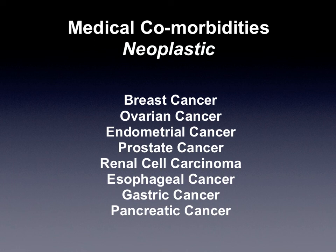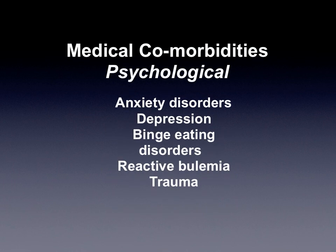Cancer is also affected by obesity. We see increased breast cancer, ovarian, endometrial, and prostate cancer directly related to weight. The wonderful thing is that we can have risk reduction and normalization of risk for many of these cancers when we get people to a healthier weight. Likewise, there are lots of psychological disorders that go along with weight — increased anxiety and depression, binge eating disorders, and reactive bulimia. So we not only see things affect the body physically, but also mentally.